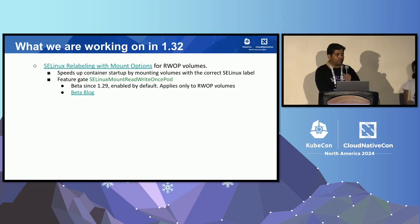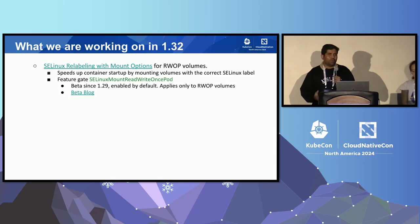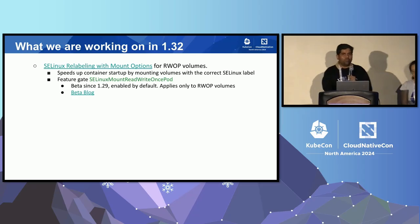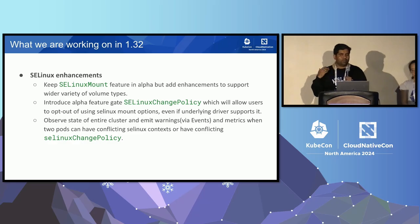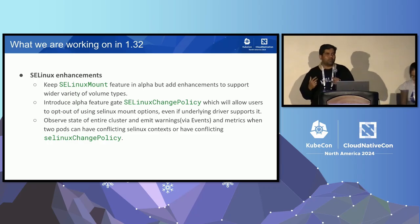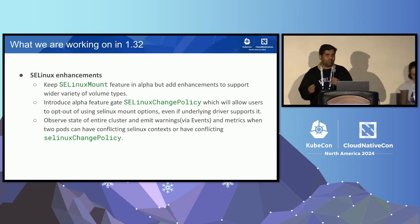We've been continuously working on improving SELinux relabeling, which is time-consuming and was done by the container runtime — it used to time out and was quite expensive. It's now the default in 1.31 for read-write-once pods, but we are working to make it default for all volume types. We've introduced a new feature gate called SELinux change policy. Because enabling this for all volume types could introduce breaking changes, this additional feature gate allows you to configure the SELinux change policy in your pod and opt out of using the mount option for SELinux relabeling.